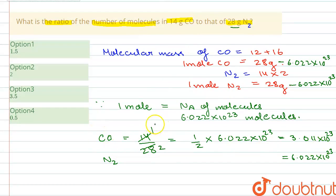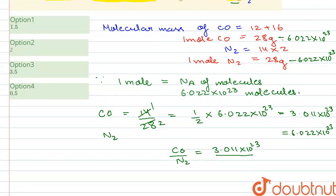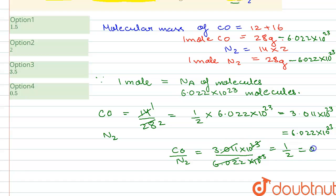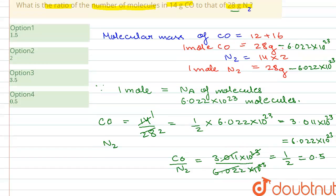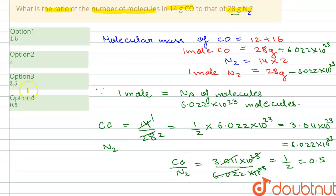Now we just take the ratio between the two: the number of molecules of carbon monoxide for 14 grams divided by the number of molecules of nitrogen for 28 grams. That gives 3.011 × 10²³ divided by 6.022 × 10²³. The powers of 10 cancel, giving us 1/2 or 0.5. So the correct answer is 0.5.